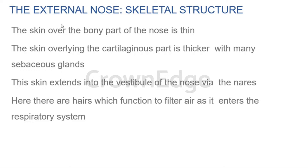The nose has two parts: a bony part and a cartilaginous part. The skin overlying the cartilaginous part is thicker with many sebaceous glands. The bony part is located close to the eyes, while the cartilaginous part is visible as you come down closer to the mouth.